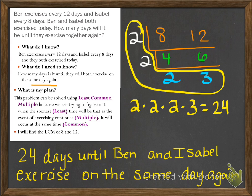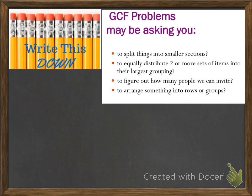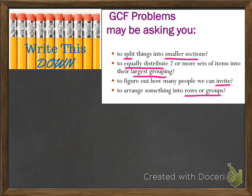Now let's look at greatest common factor problems. GCF problems may be asking you to: split things into smaller sections; equally distribute two or more sets of items into their largest grouping; figure out how many people can be invited; or arrange something into rows or groups. Go ahead and pause the video to jot down those four bullets, labeled as GCF problems.